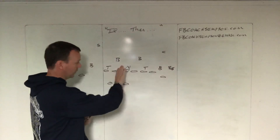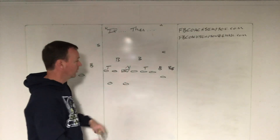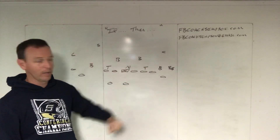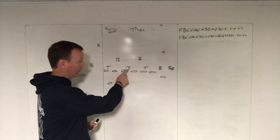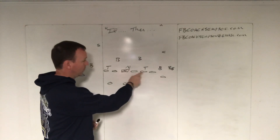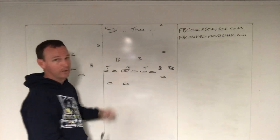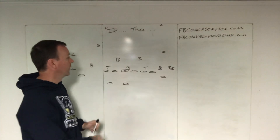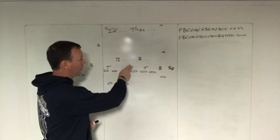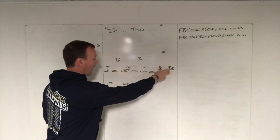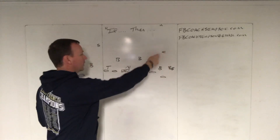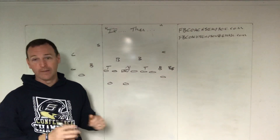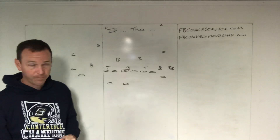So the defense is lined up in this look. If you drew a line from our center that direction, counting our center — one, two, three, four, five players on that side of the ball. The defense has one, two, three, four, five, six. So the defense has an extra guy than we do to the strong side.